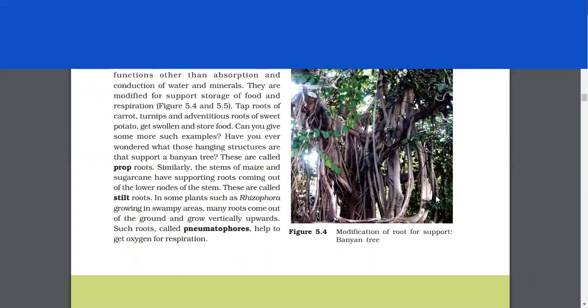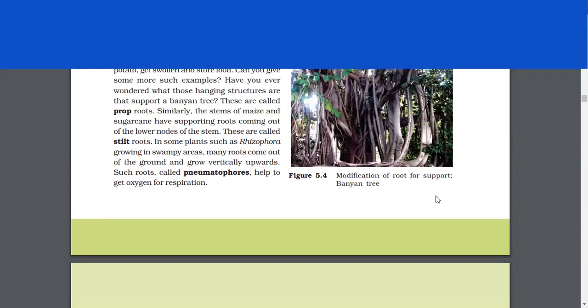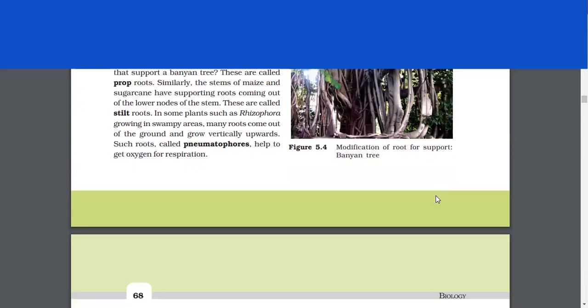Similarly, the stems of maize and sugarcane have supporting roots coming out of the lower nodes of the stem. These are called stilt roots. In some plants such as rhizophora, growing in swampy areas, many roots come out of the ground and grow vertically upwards. Such roots called pneumatophores help to get oxygen for respiration.